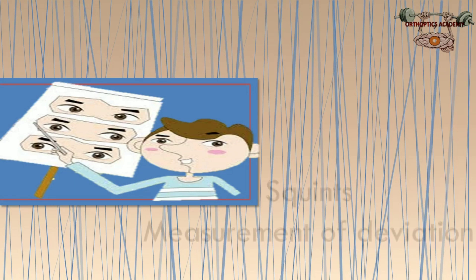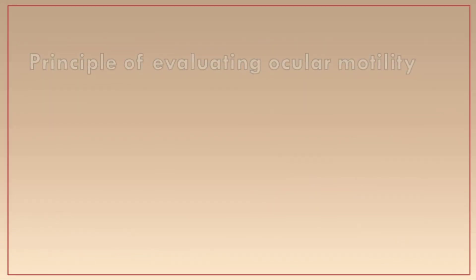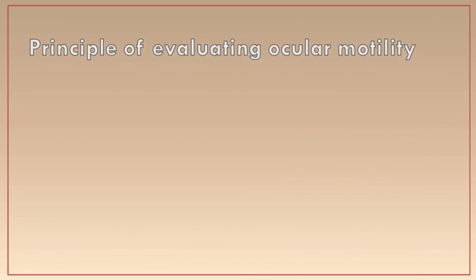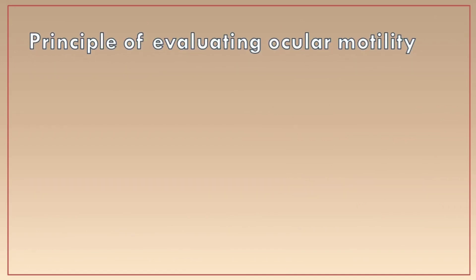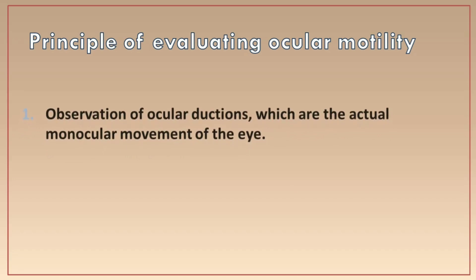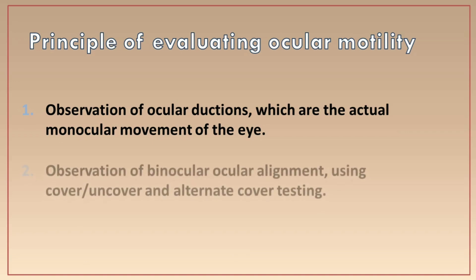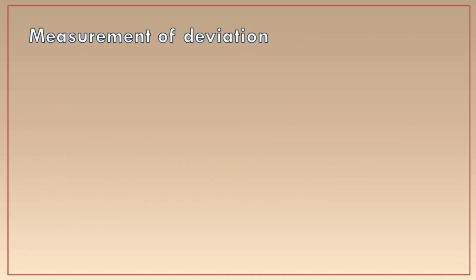Welcome to this video giving a brief overview of squint measurements. The principle of evaluating ocular motility is based on two factors: first, observation of ocular ductions, which are the actual monocular movements of the eye; and second, observation of binocular ocular alignment using the cover and uncover and alternative cover test.